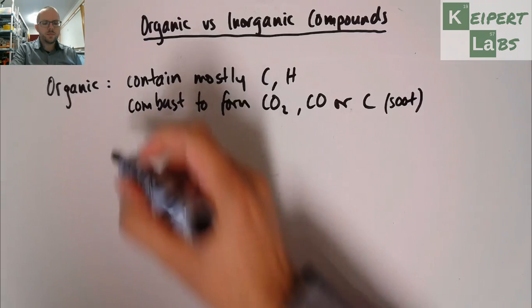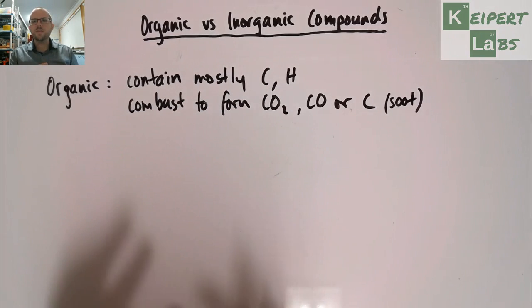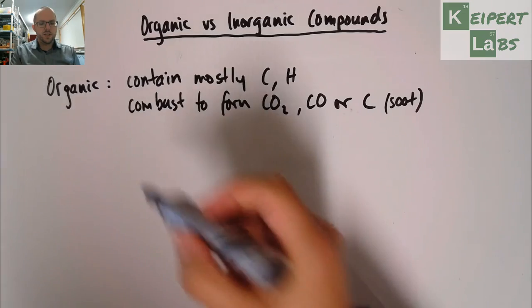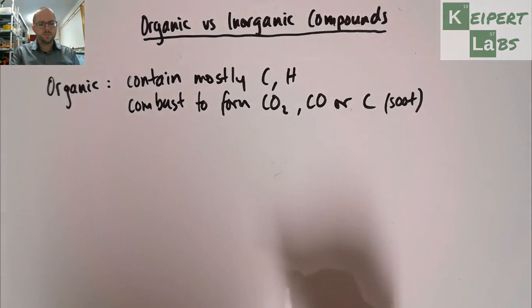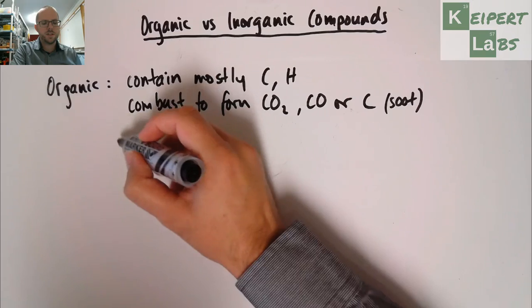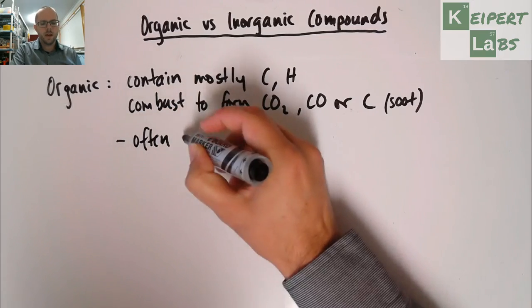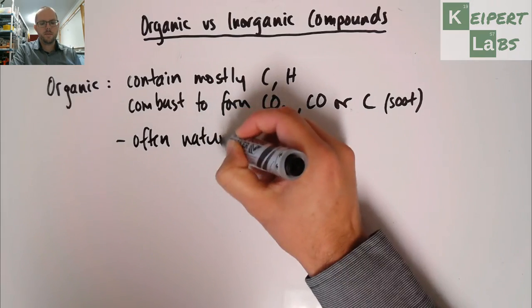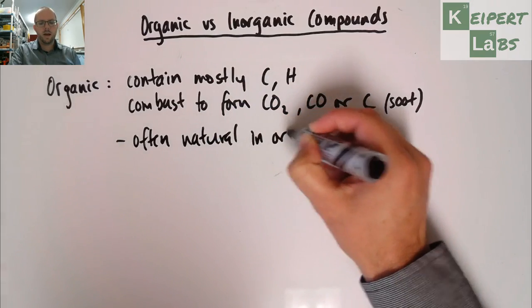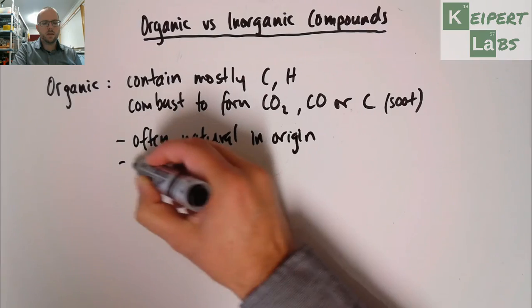So substances that are organic, now it's different from an everyday use of the word organic, like you might say organic farming or organic vegetables. This is the chemistry definition for it. Substances that are organic are often natural in origin, but can be man-made.